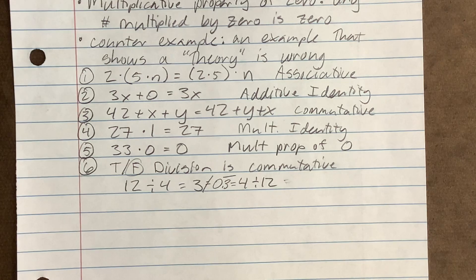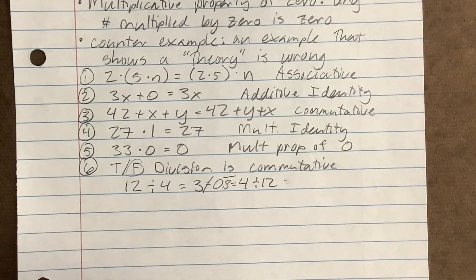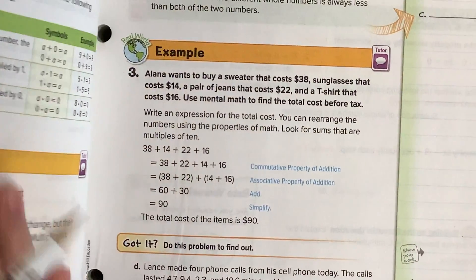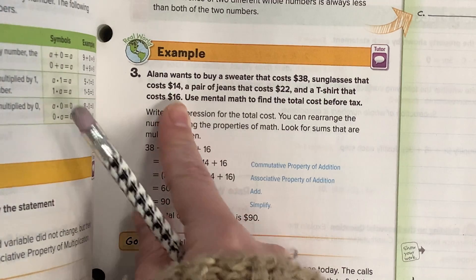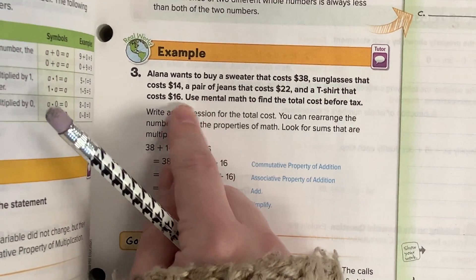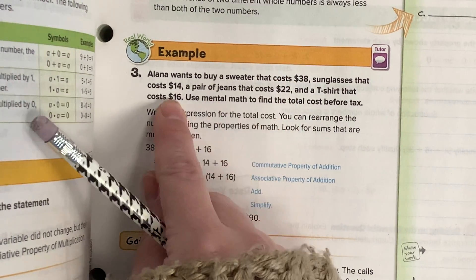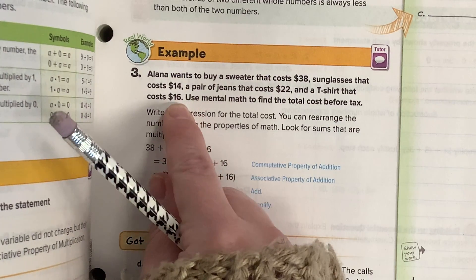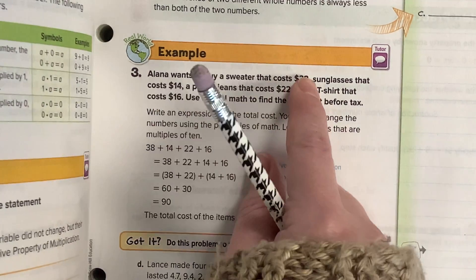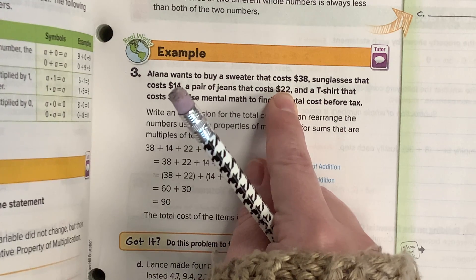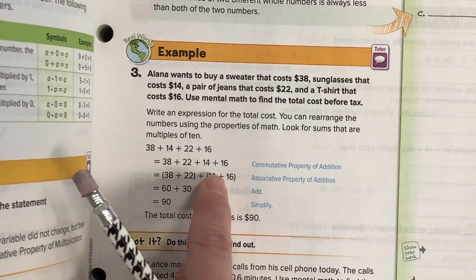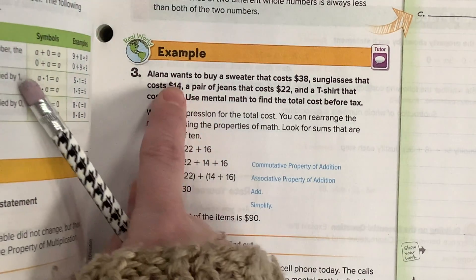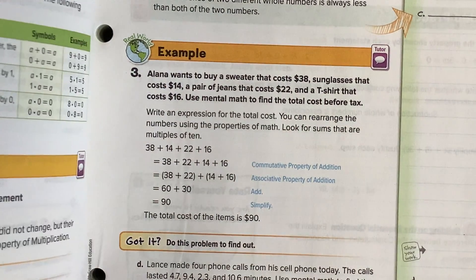There's a section on doing mental math using the commutative property. The idea is: can you add these numbers with your brain without writing anything down? For example, instead of doing 38 plus 14 plus 22 plus 16 in order, you could put 14 and 16 together because 4 and 6 add up to 10, making 30. Then put 38 and 22 together because 8 and 2 add up to 10, making 60. Then 60 plus 30 is 90. So if it's all addition or all multiplication, you can change the order to make the math easier.